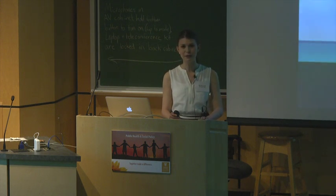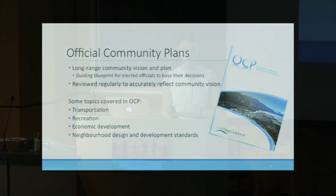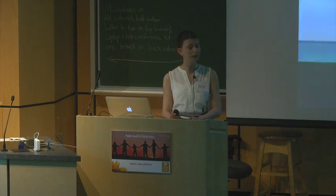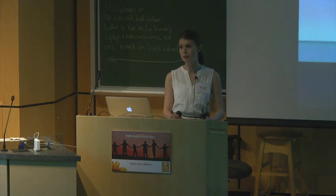For folks who are unfamiliar with OCPs, they are municipal bylaws legislated through the BC Local Government Act. They serve as a blueprint for elected officials to base their decisions on. The OCP states long-range community vision, goals, and objectives, and then contains the policy to help achieve these goals. In order to be an accurate reflection of current community vision and context, OCPs are typically reviewed at regular intervals — a process that usually takes multiple years from initiation to adoption. Topics an OCP covers typically include transportation, recreation, and land use, though this list varies between municipalities.